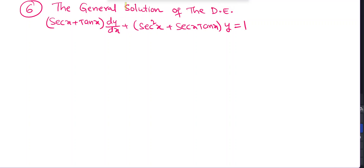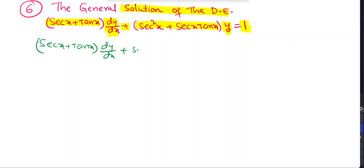This is the sixth question. The general solution of the differential equation (sec x + tan x)·dy/dx + (sec²x + sec x + tan x)·y = 1. The given DE after dividing by (sec x + tan x) gives dy/dx + sec x·y = 1/(sec x + tan x) = sec x - tan x.